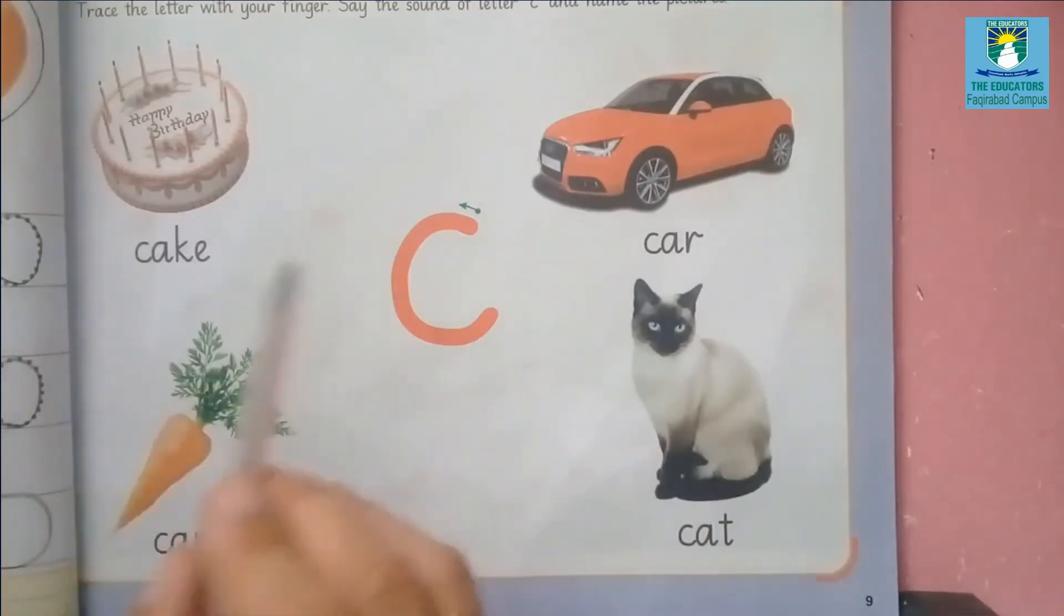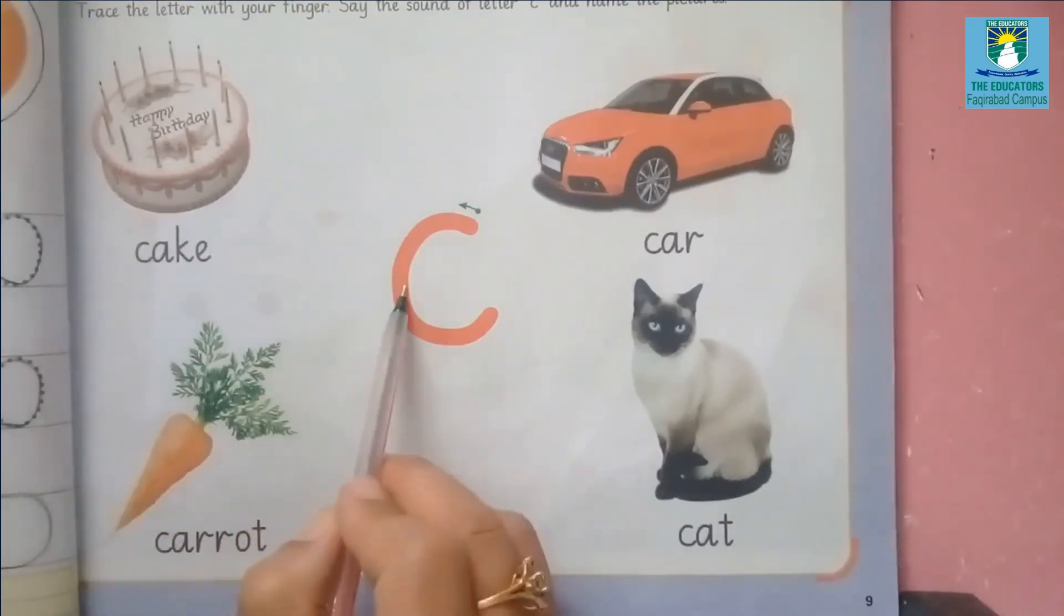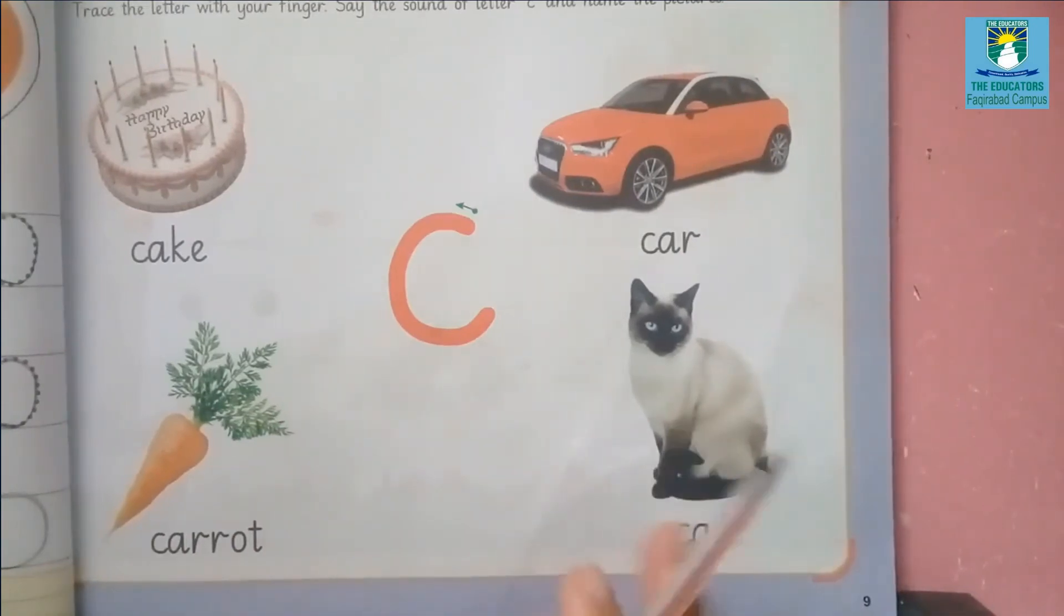I hope you will understand this lecture. Again, I repeat for you. Read with me: C-k cake, C-k car, C-k carrot, C-k cat. Very good.